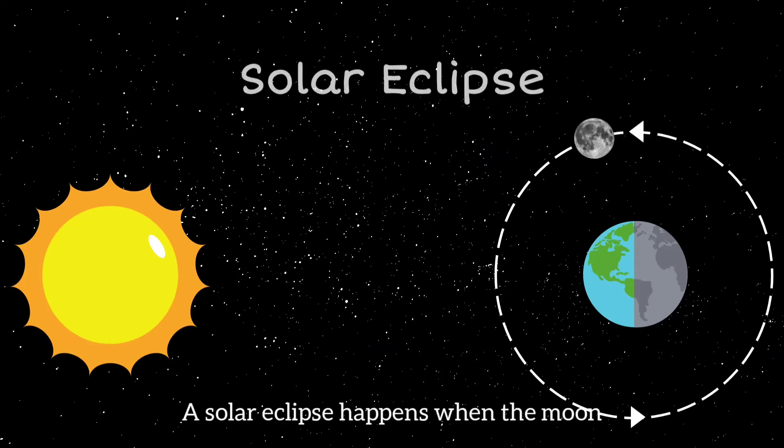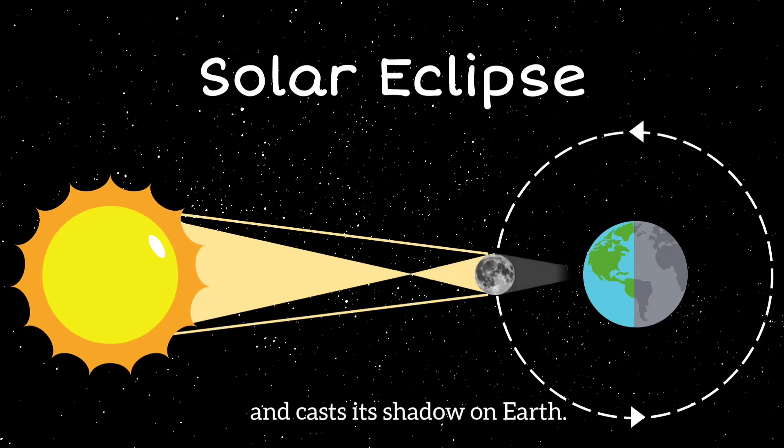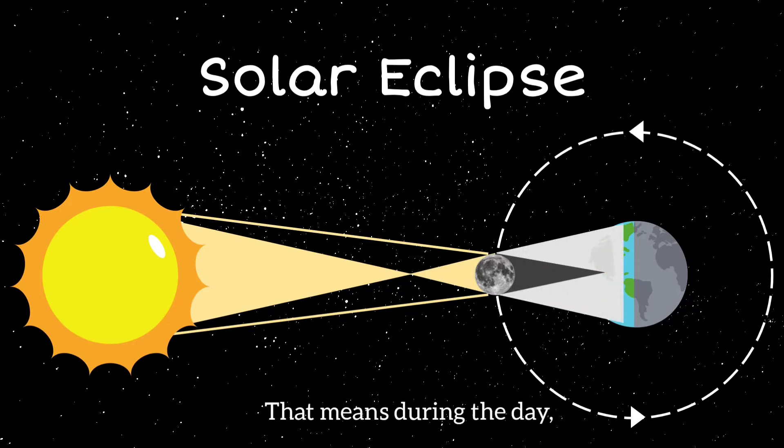A solar eclipse happens when the moon gets in the way of the sun's light and casts its shadow on Earth. That means during the day, the moon moves over the sun and it gets dark. It will only take place at the phase of the new moon.